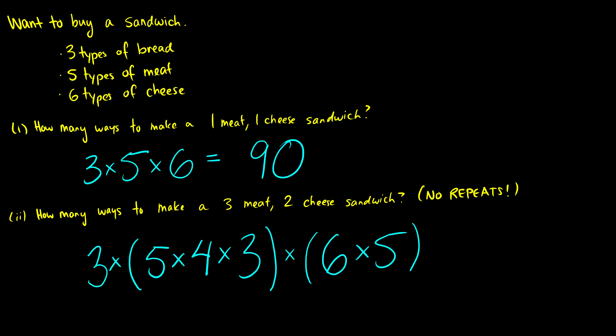So our end result is going to be much higher than 90. It's going to be 15 times, or let's say 3 times 60 times 30. It's 90 times 60, so this is going to be 5,400 possible combinations.